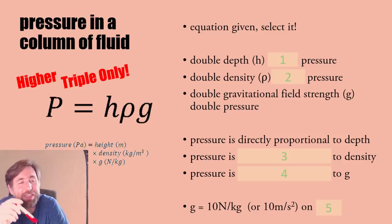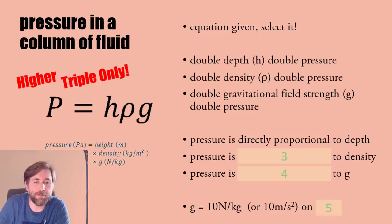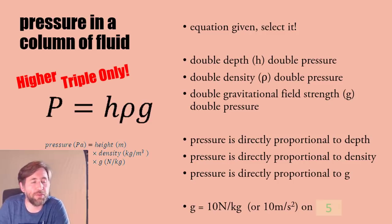This equation you get given: pressure is height times density times g. In other words, if you double the depth, you double the pressure. If you double the density, you also double the pressure. Pressure is directly proportional to depth, directly proportional to density, directly proportional to g. Remember g is 10 newtons per kilogram or 10 meters per second squared on earth. For AQA you need to do it as 9.8.